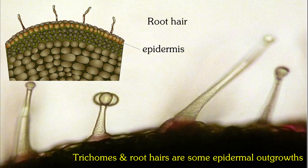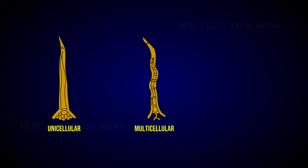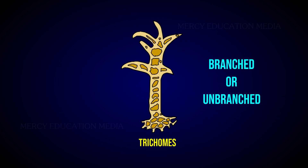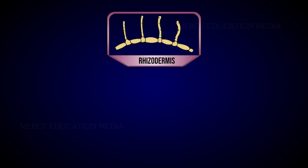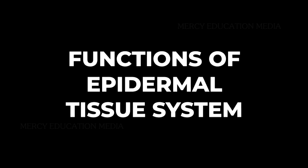Trichomes and root hairs are some epidermal outgrowths. The unicellular or multicellular appendages that originate from the epidermal cells are called trichomes. Trichomes may be branched or unbranched. Rhizodermis has two types of epidermal cells: long cells and short cells. The short cells are called trichoblasts, and root hairs are produced from these trichoblasts.